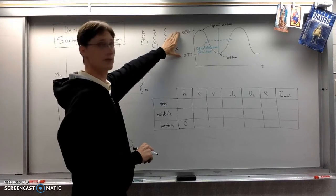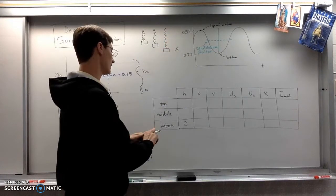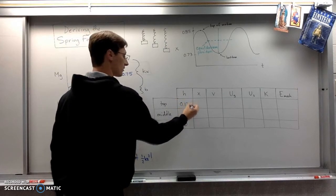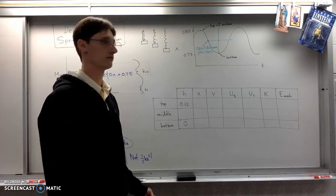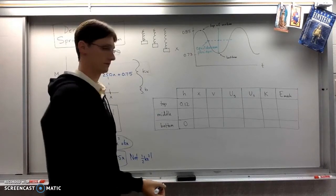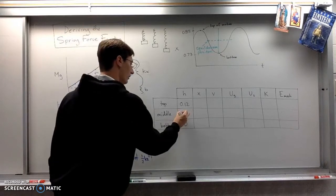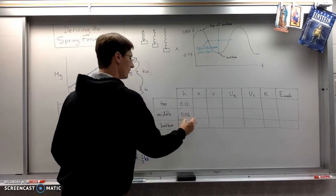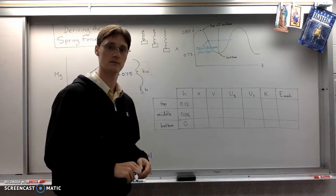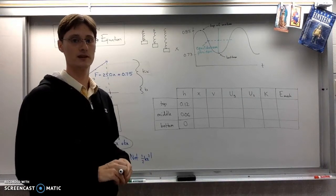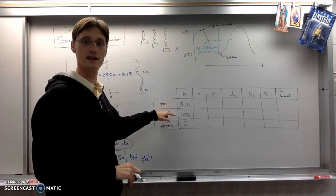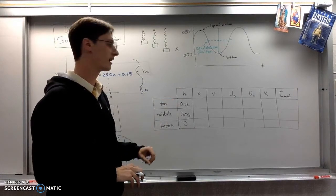All right, so that means that if my numbers here are 0.73 was the lowest position and 0.85 was the highest, the difference between those is 0.12. So at the top, it's 0.12 meters above the bottom. All right, in the middle, it's half of that, so 0.06 meters above the bottom. Okay, all right, so getting the height should be a relatively straightforward matter of just subtracting to get the top one and half of that to get the middle one.